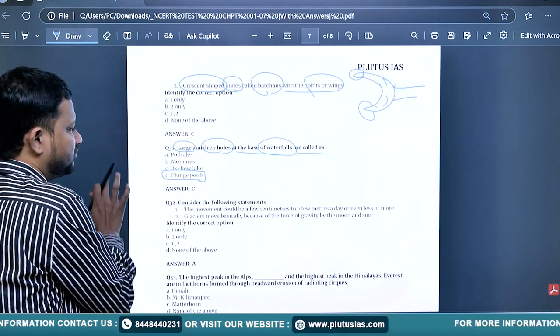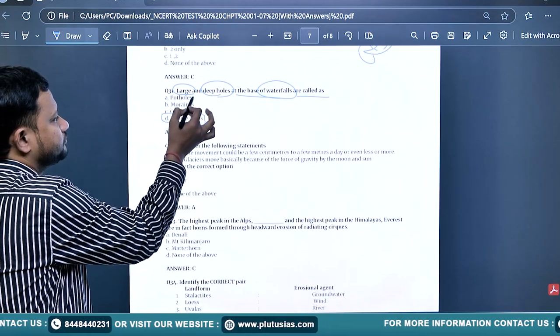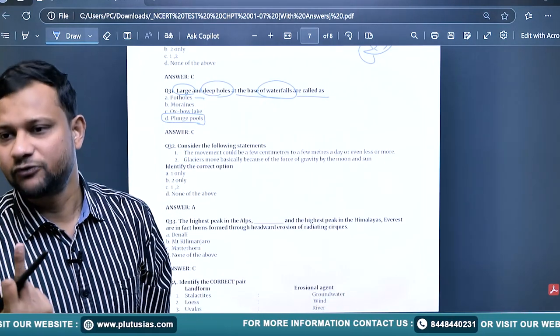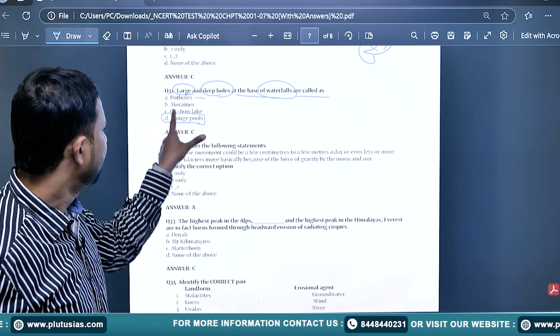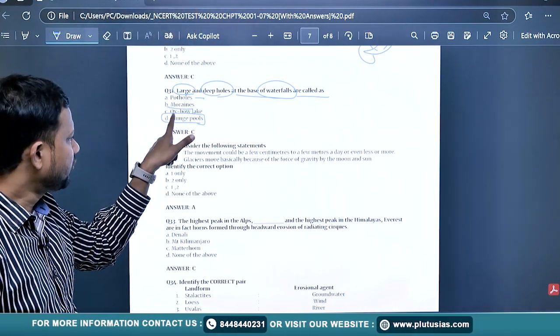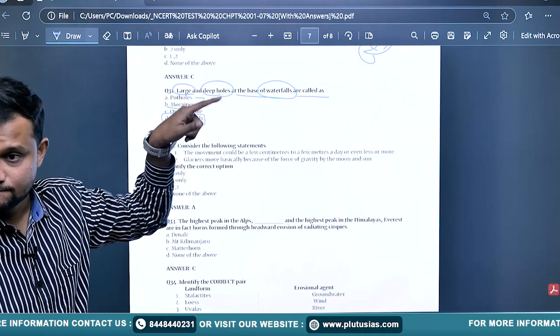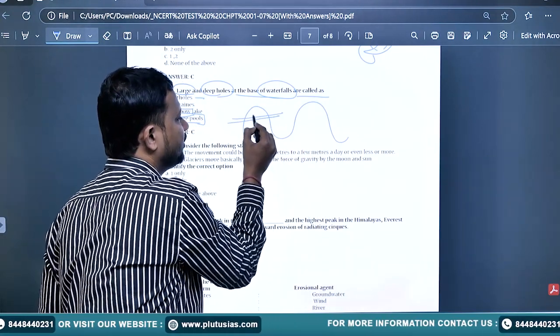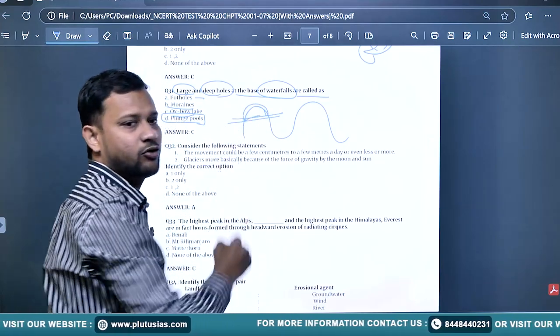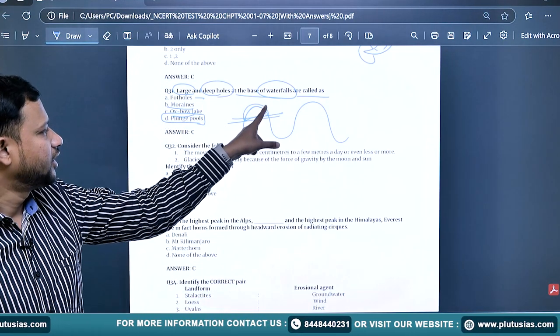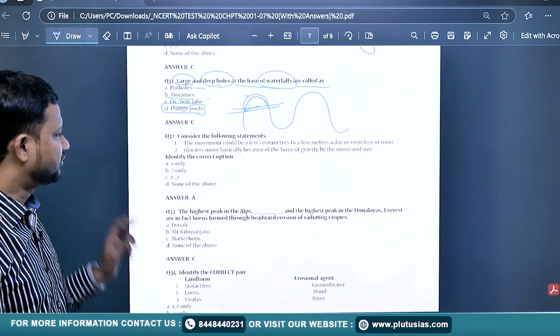Potholes are circular formations due to eddy current in the river course. Moraines are from glaciers. Oxbow lake - when meandering gets cut, when this loop gets disconnected from its main channel during or after the course of flooding, it is known as oxbow lake.